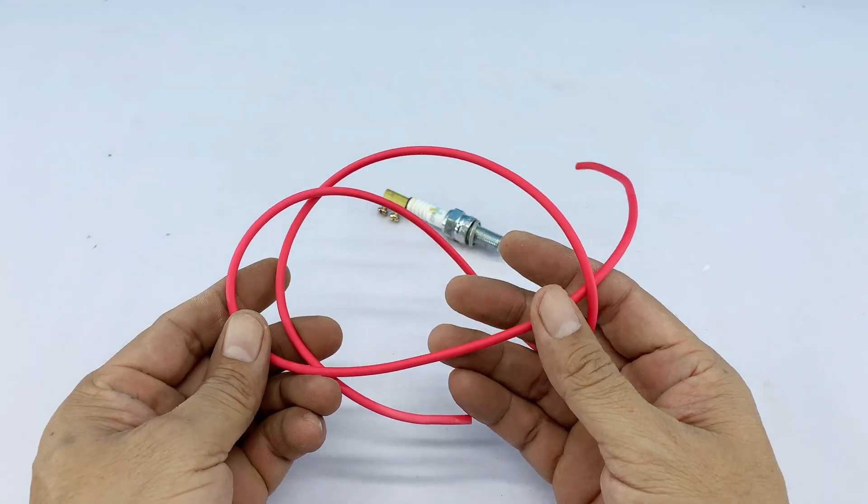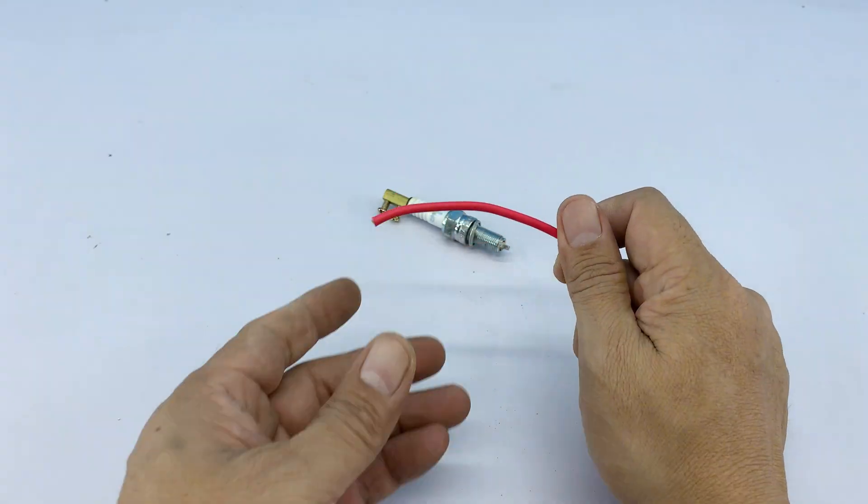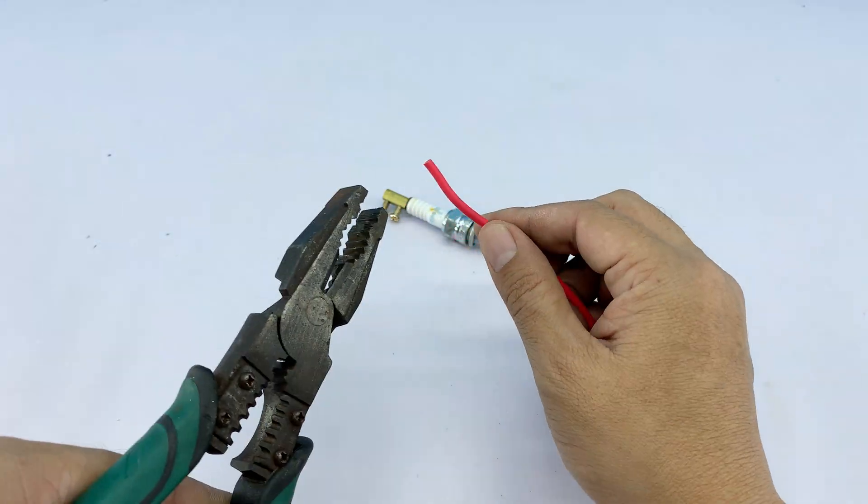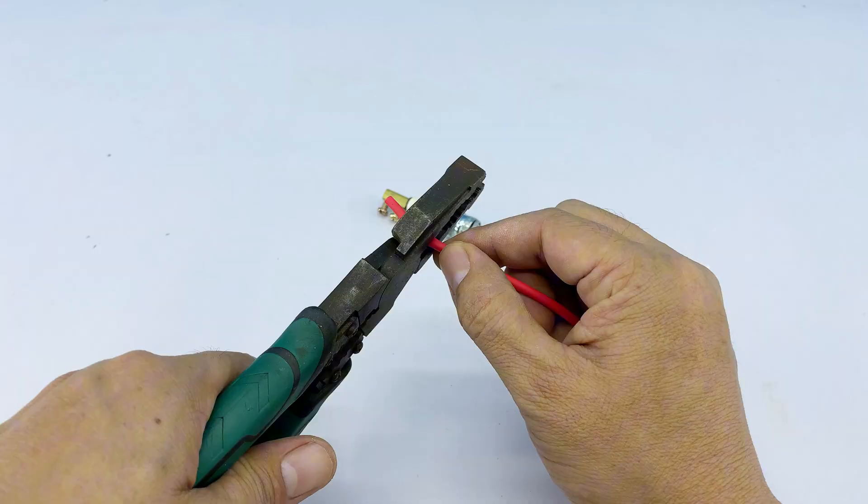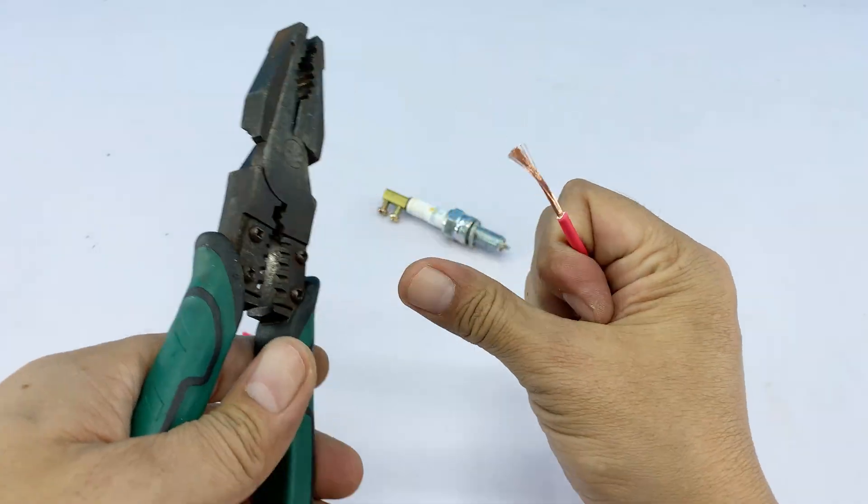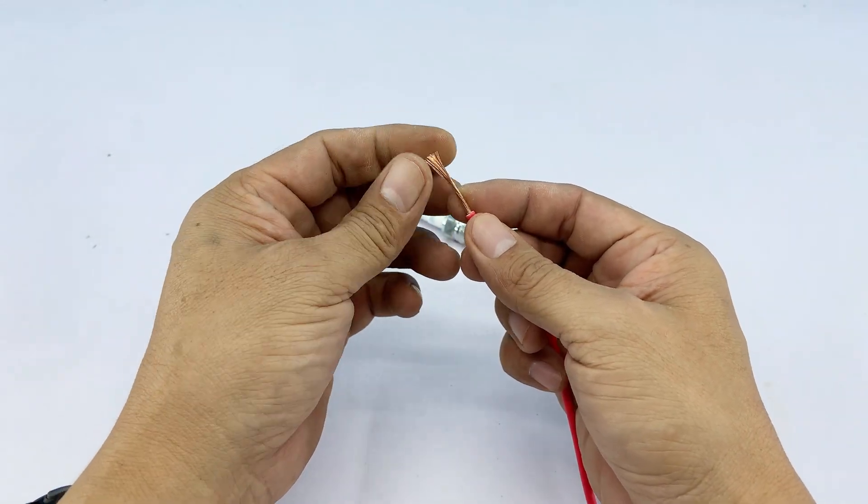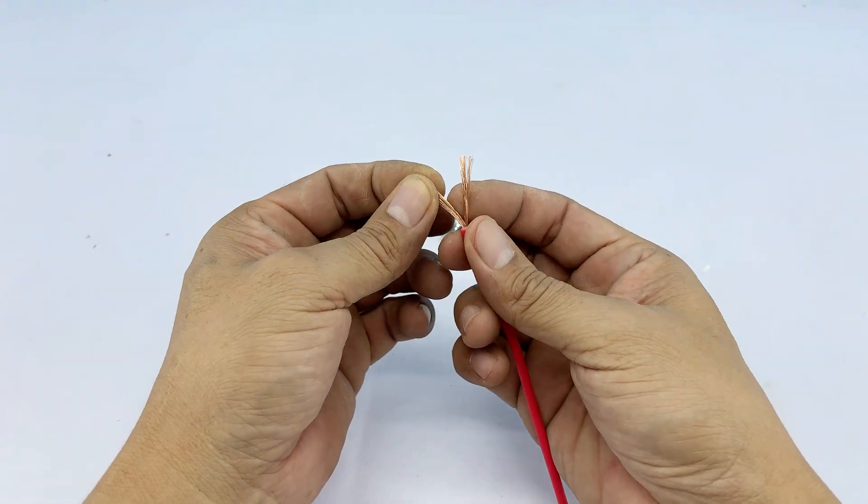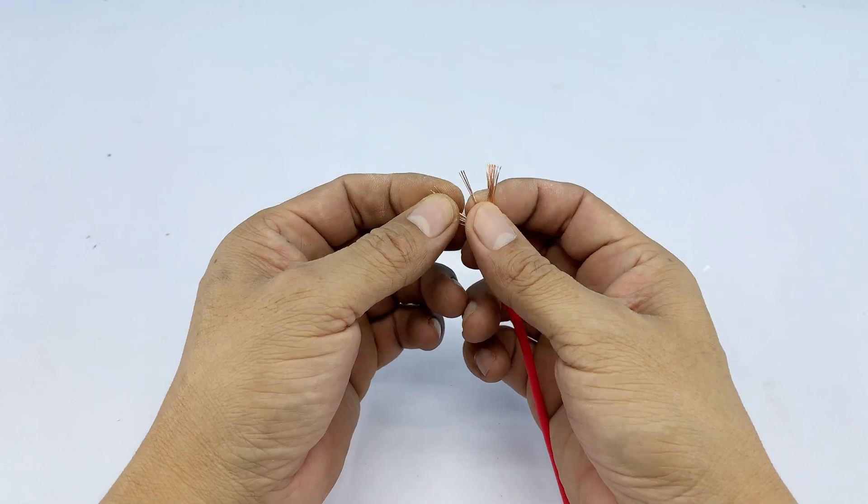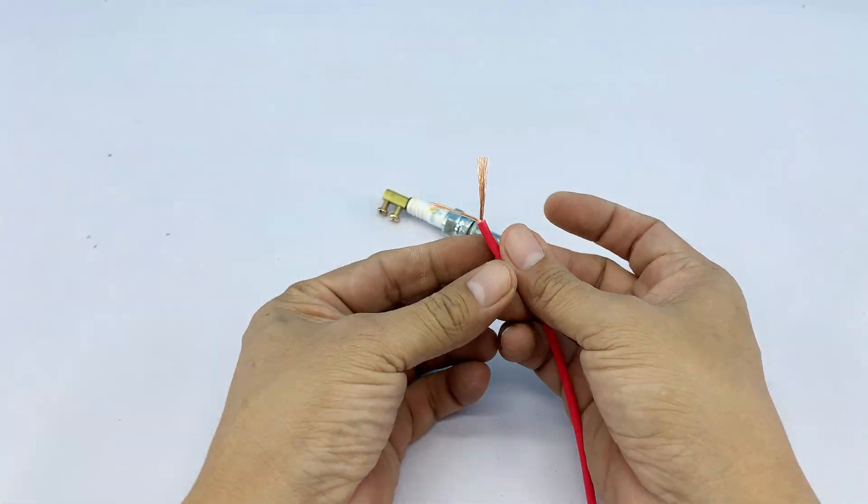For the next step, prepare an electrical wire, a simple, flexible copper core wire works perfectly. First, take either end of the wire and connect it directly to the metal connector we set up earlier. Make sure to twist the copper strands neatly and fasten them firmly so the current has a clean, stable path without jumping around.